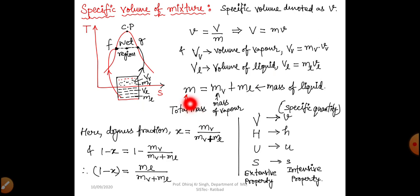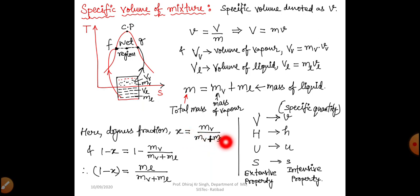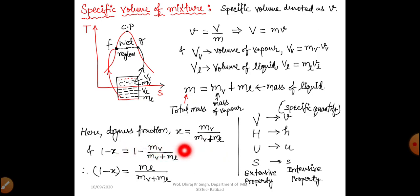Total mass is the summation of mass of vapor and mass of liquid: m = mv + mL. Dryness fraction x = mv / (mv + mL). Therefore, 1 − x = 1 − mv/(mv + mL). Extensive properties depend on mass; intensive properties are obtained by dividing by mass.